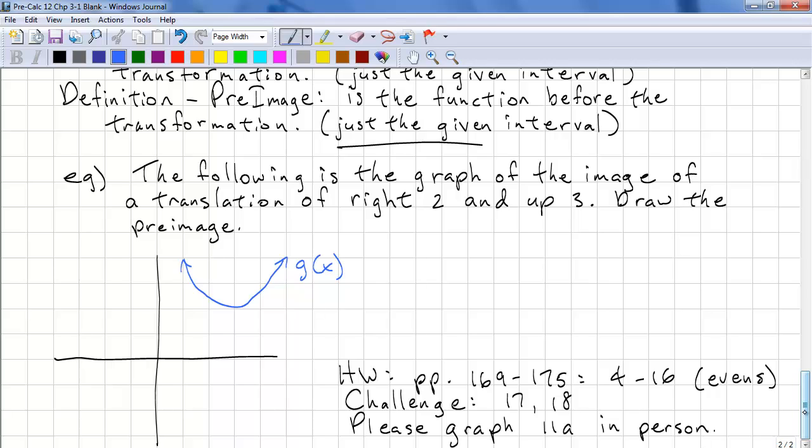One more example. The following graph is the image of a translation of right 2 and up 3. Draw the preimage. So this time we have to work backwards.